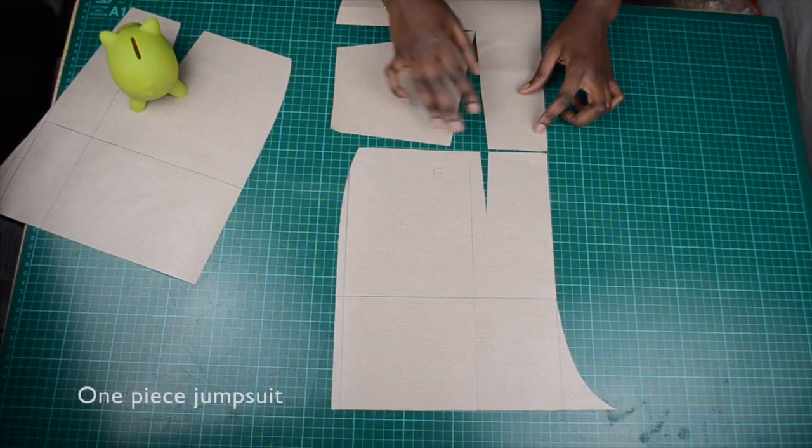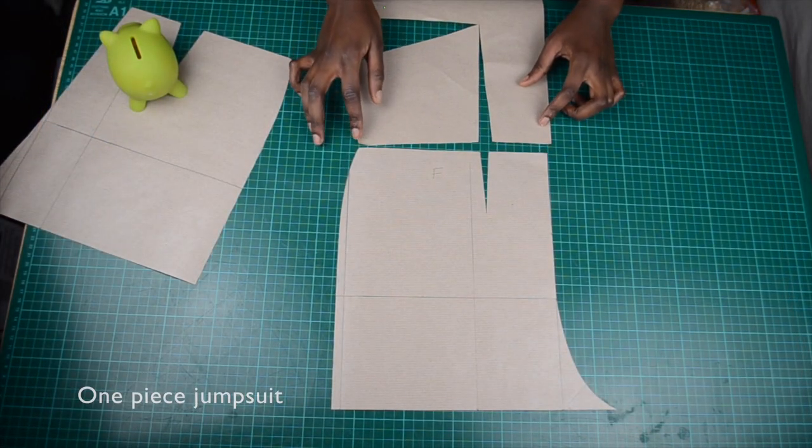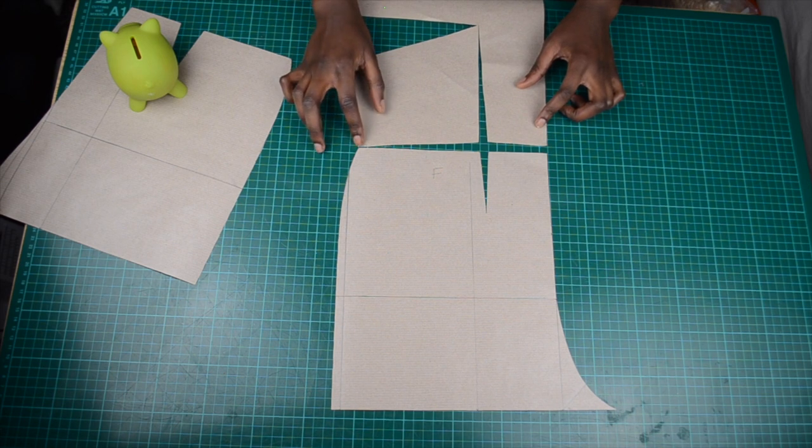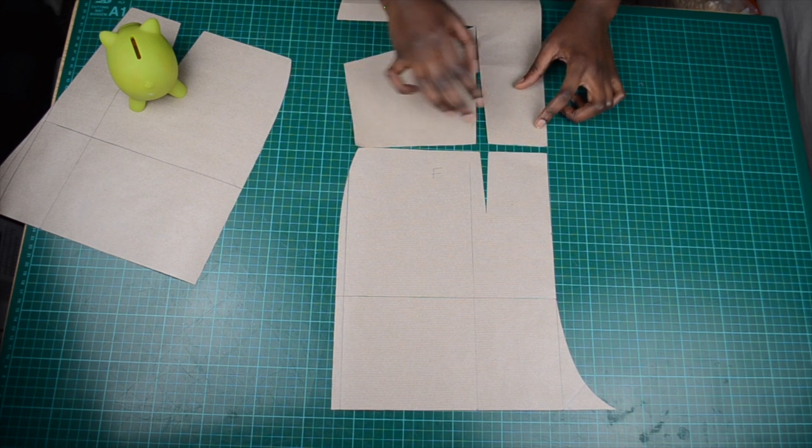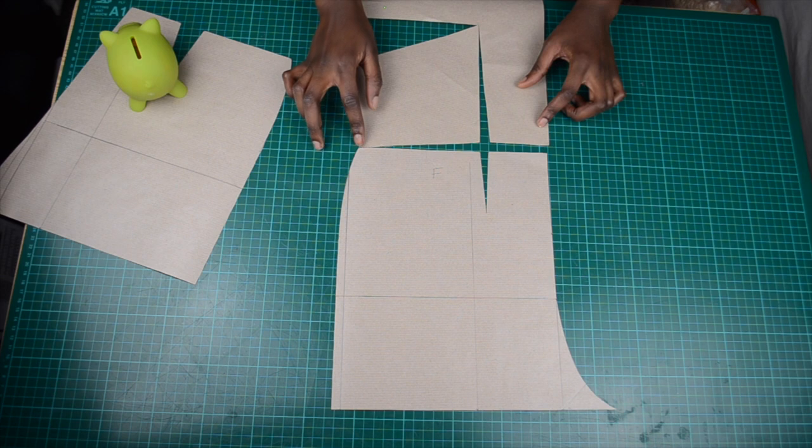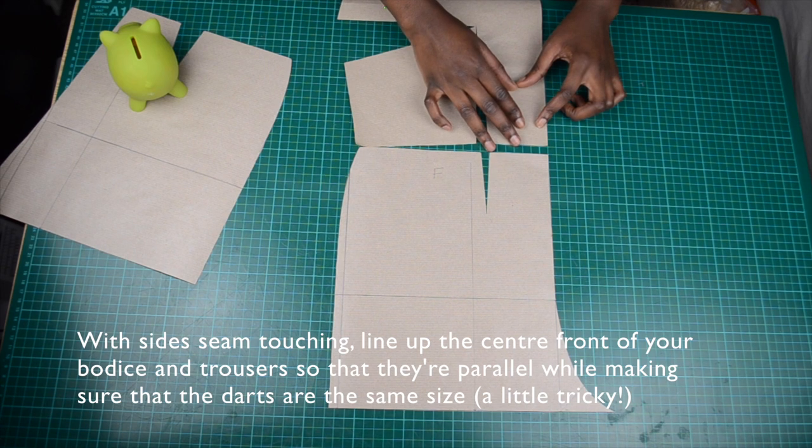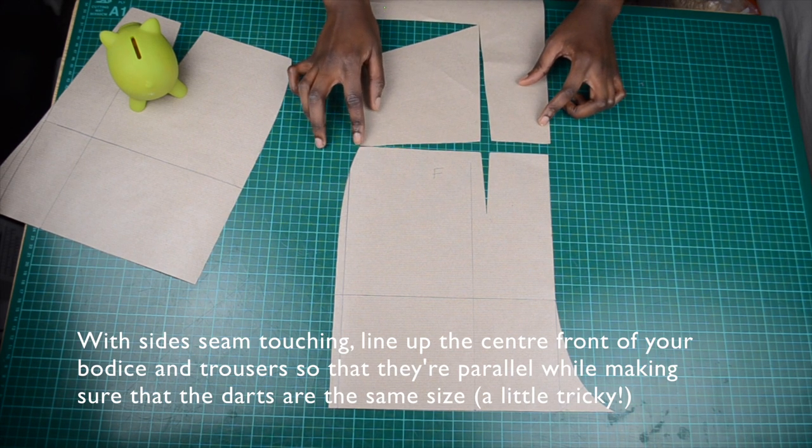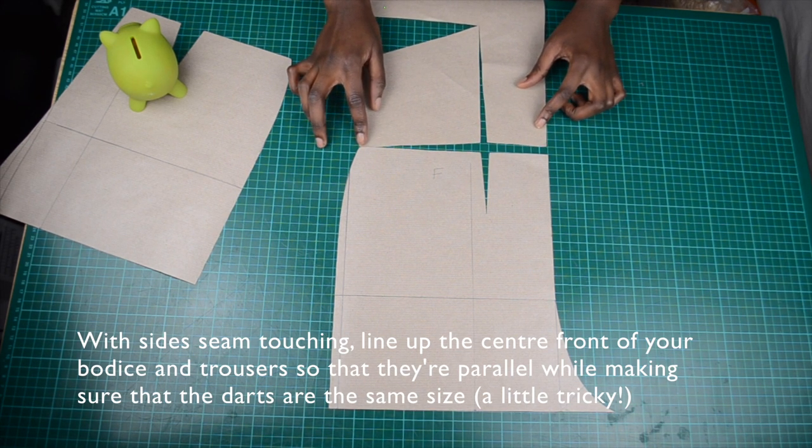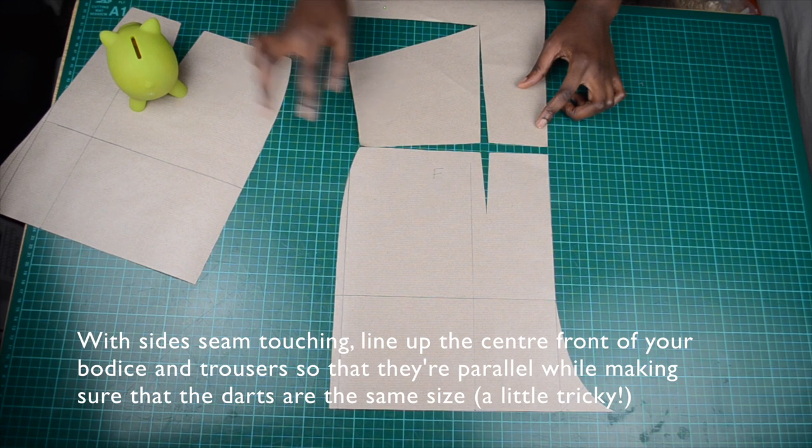I will now show you how to create a one-piece jumpsuit, but if you want you can create a separated jumpsuit where the bodice is cut out separately to the trousers and then sewn together. The aim is to get the darts of the bodice to be in line with the darts of the trousers. Place the side seam of your front bodice on top of the side seam of your trouser pattern and move your bodice darts until it's the same size as the trousers.